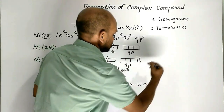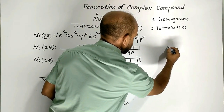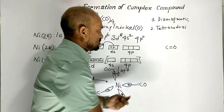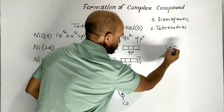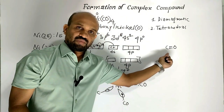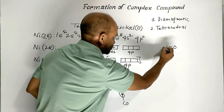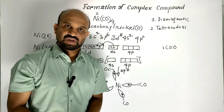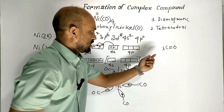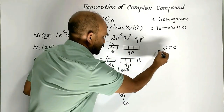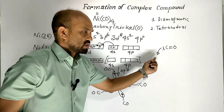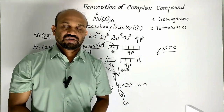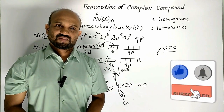The ligand is carbon monoxide. In the structure of carbon monoxide, carbon forms a double bond with oxygen, using two electrons from its outermost shell. Since carbon has four electrons in its outermost shell, two electrons remain free as a lone pair. This lone pair of carbon forms a coordinate covalent bond with the vacant orbital of the transition metal atom. In this way, carbon monoxide acts as a neutral ligand. This is all about the formation of tetracarbonyl nickel.